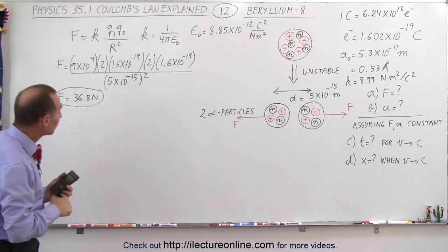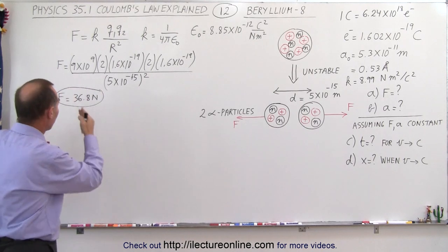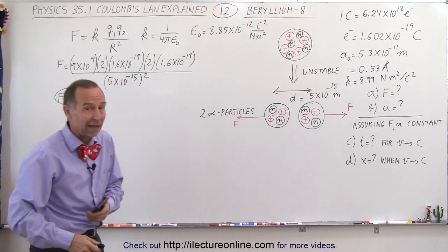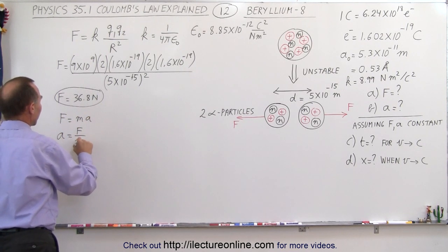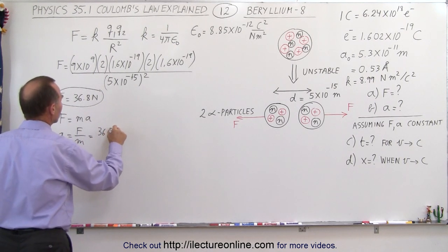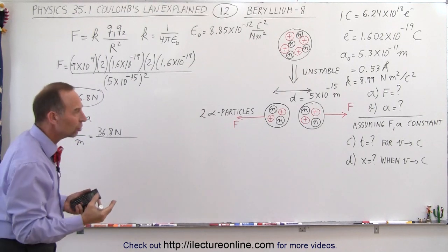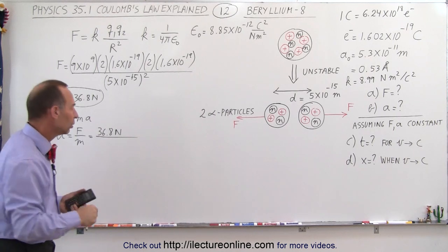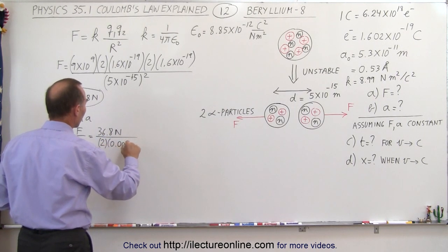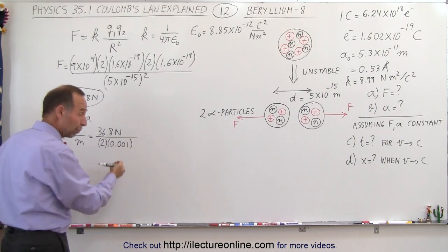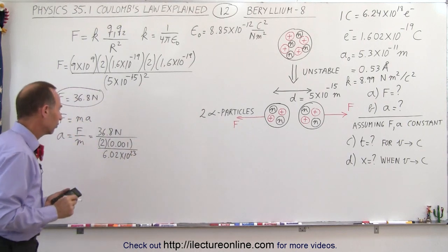The force is roughly 36.8 newtons. Imagine that — that's an enormous amount of force between two tiny alpha particles, which are basically the nucleus of a helium atom. Therefore there will be a tremendous acceleration. Using F equals ma, acceleration equals force divided by mass. The force is 36.8 newtons, and the mass is the mass of two alpha particles. Each alpha particle has four nucleons, each with a mass of about one atomic mass unit, which is 0.001 kilograms per mole. So we take 2 times 0.001 kilograms divided by Avogadro's number, 6.02 times 10 to the 23rd.